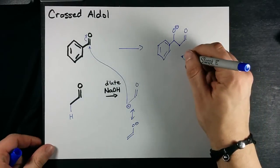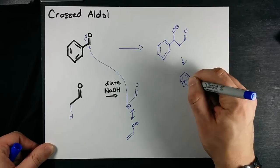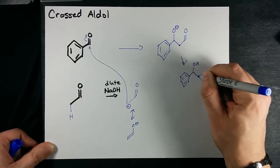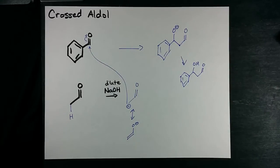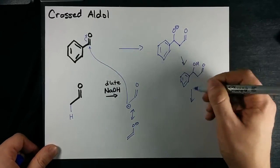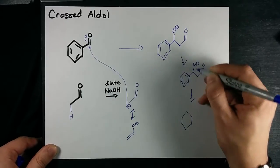In any case, you know what happens from here in an aldol. There's some water around because we're using dilute NaOH - that helps us form an OH group on the beta carbon. And give it a few steps, we can do a dehydration reaction, remove this OH.